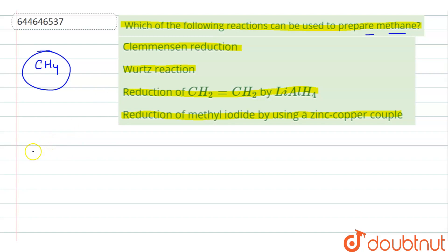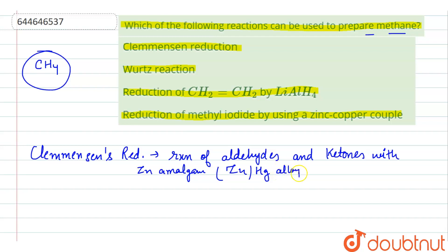Clemmensen reduction is basically the reaction of aldehydes and ketones with zinc amalgam, that is ZnHg, that is mercury alloy. We can write it as ZnHg alloy in concentrated HCl, which reduces the aldehyde and ketone to a hydrocarbon.